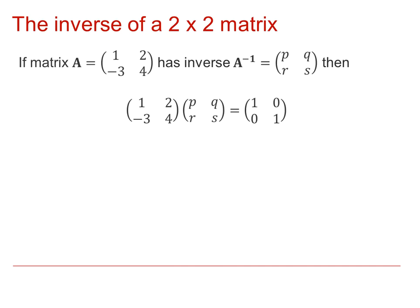In general, if I've got a matrix, I want to be able to work out what its inverse matrix is. So, here we've got the matrix (1, 2; -3, 4), and an unknown inverse that I'm going to call (P, Q; R, S). We know that if we multiply those two together that we get the identity matrix (1, 0; 0, 1).